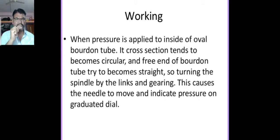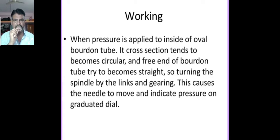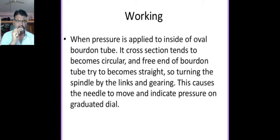When pressure is applied inside the oval Bourdon tube, its cross section tends to become circular and the free end of the Bourdon tube tries to straighten. This turns the spindle via the link and gearing, causing the needle to move and indicate pressure on the graduated dial.